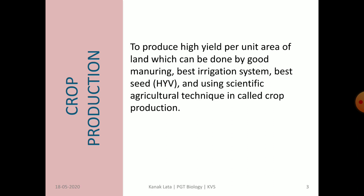The next topic is crop production. Crop production means to produce high yield per unit area of land. High crop production can only be achieved by good manuring, best irrigation system, best seeds — that is high yielding variety of seeds — and also by using scientific agricultural techniques.